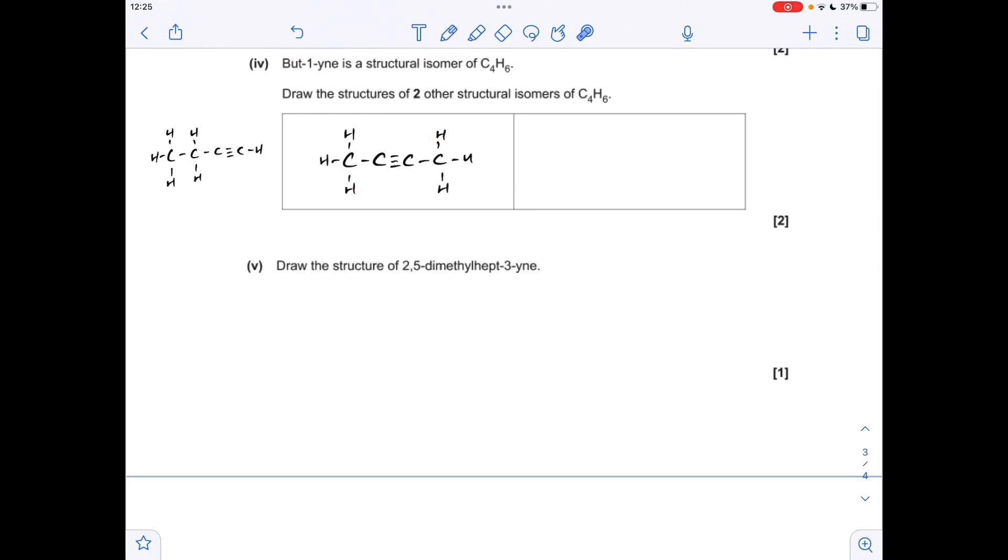Now the only other options we've got now is we need to create a ring and put a double bond in it. So we could go for cyclobutene, we could go for a cyclopropene with a methyl group there, or we could put the methyl group on the carbon with the double bond.